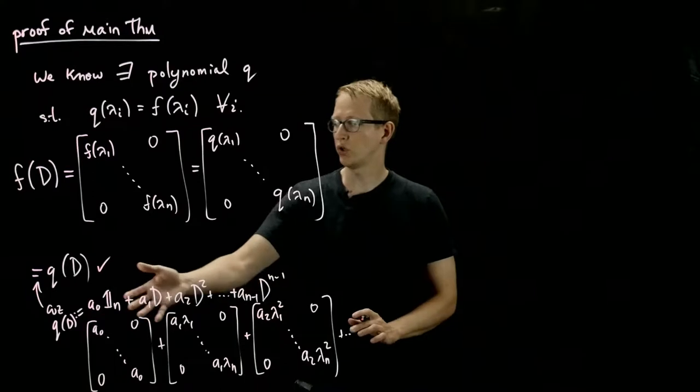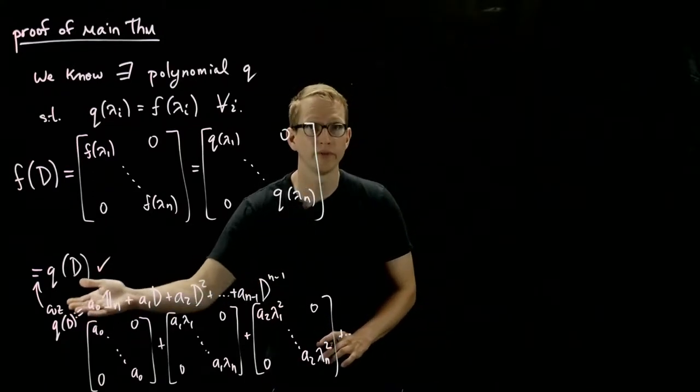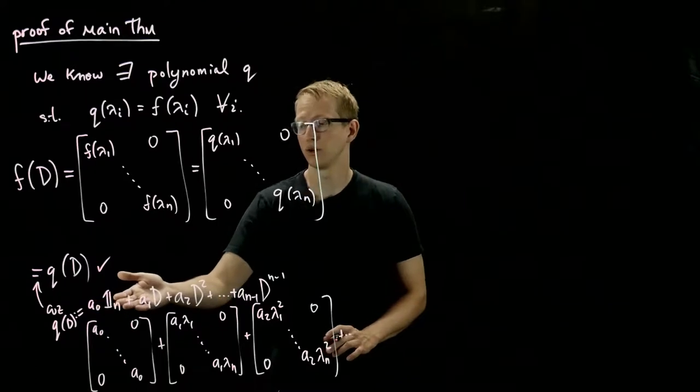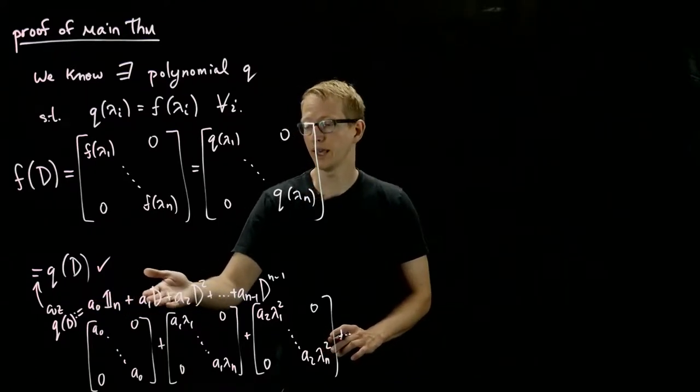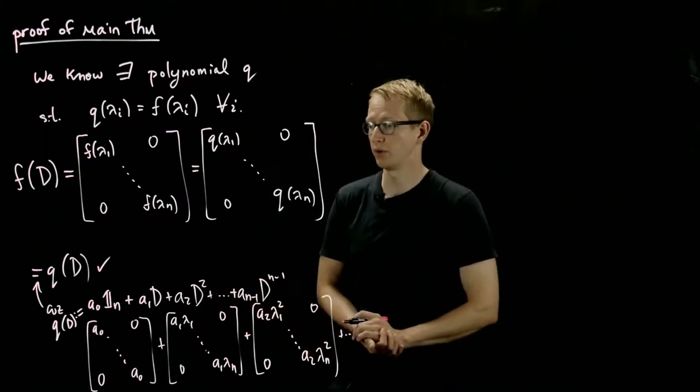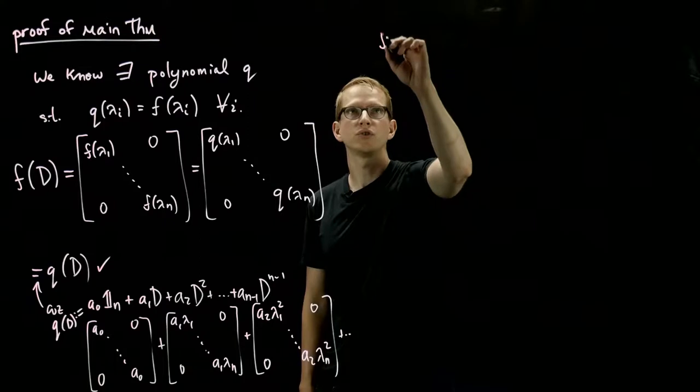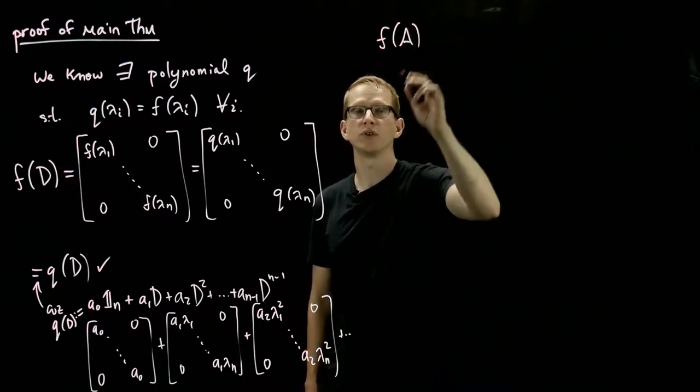And of course, q of any matrix is defined similarly. So in particular, q of A equals A0 times the identity plus A1 times A plus A2 times A squared, and so on. So now, let's show that f of A equals q of A.